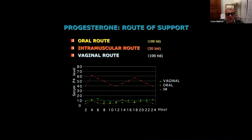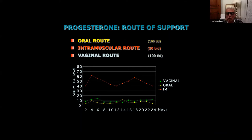When progesterone is administered, we have circulating levels that are very high if you use intramuscular progesterone, while you have a very low progesterone level if you give progesterone by vaginal or oral route.